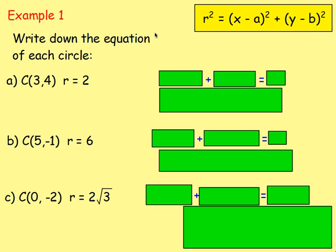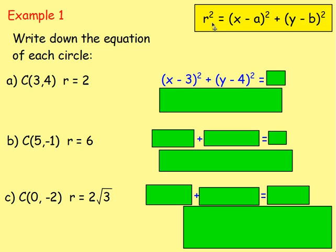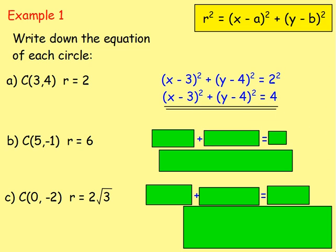Let's move on to some examples. Write down the equation of each circle. With the first one, if we've got a centre of 3, 4 and a radius of 2, the equation is r squared equals x minus a all squared. So x minus a — a is the x-coordinate of the centre — gives x minus 3, all squared. y minus b — b is the y-coordinate — gives y minus 4, all squared. That equals your radius squared, so 2 squared.